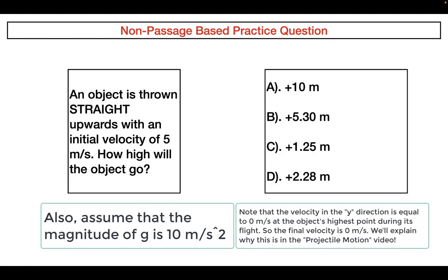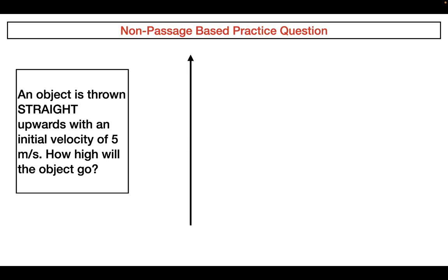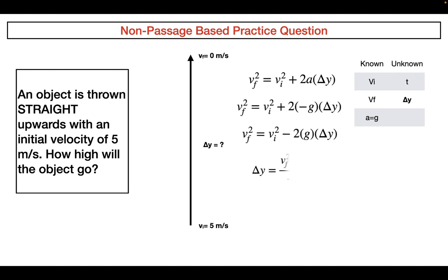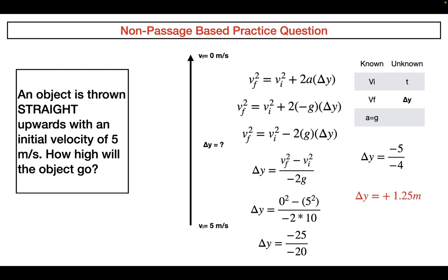Let's do another question. An object is thrown straight upwards with an initial velocity of 5 meters per second. How high will the object go? Pause the video and answer it yourself. The correct answer is choice C. Drawing a picture, the object moves upward. The initial velocity is 5 meters per second, the final velocity at the peak is 0 meters per second, and we know g. Using VF² = VI² + 2A·ΔY again and substituting in values, the vertical displacement works out to approximately 1.25 meters — the highest height this object will reach.